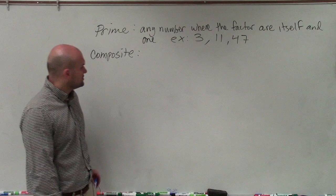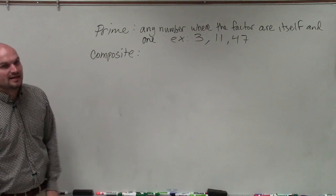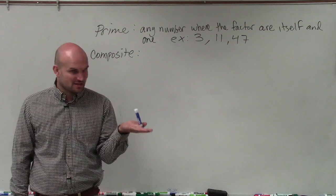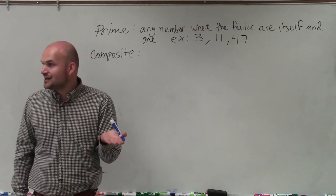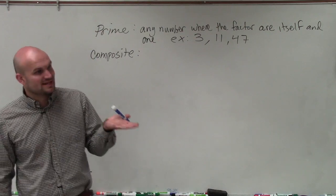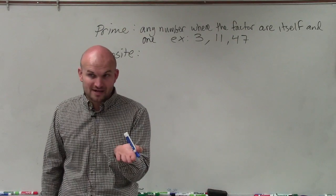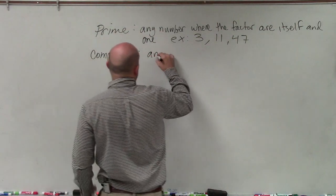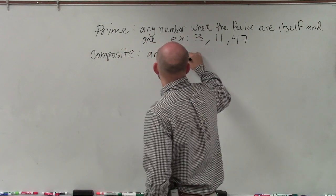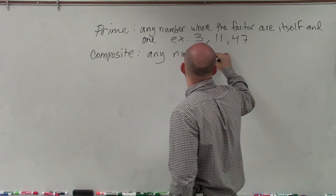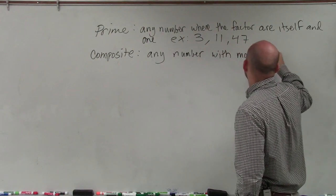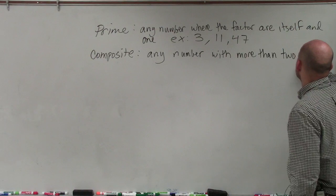The next thing I'd like to go over with you guys is what exactly a composite number is. If a prime number's only factors are itself and one, then a composite number is going to have those two factors and any other factors. So it's going to be any number with more than two factors.